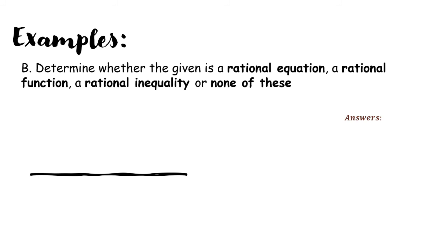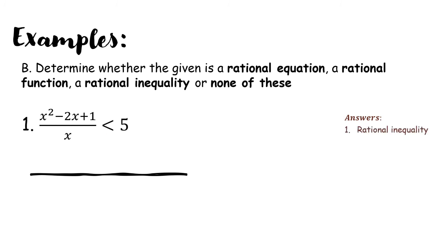Now determine whether the given is a rational equation, rational function, rational inequality, or none of these. Number 1: x squared minus 2x plus 1 all over x, less than 5. First check both sides — this is a rational expression, and we have the inequality sign. Therefore, we have a rational inequality.